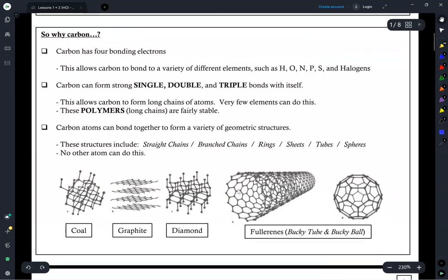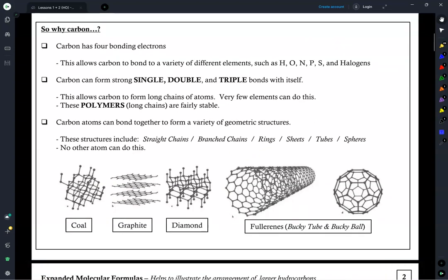Alright, so why the carbon atom? What's so special about it? Well, first off, carbon has four bonding electrons. This allows it to bond to a variety of different elements, which allows it to produce a diverse set of molecules with unique characteristics and properties.